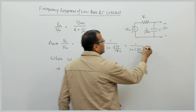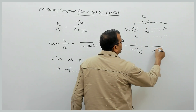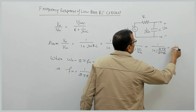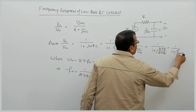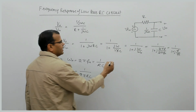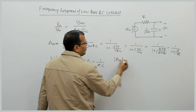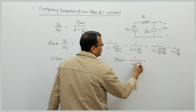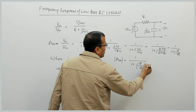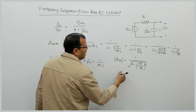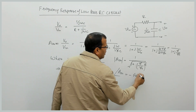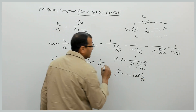This can be written as 1/(1 + j·2πF/(2πFH)), which simplifies to 1/(1 + jF/FH). The magnitude of AV₀ is equal to 1/√(1 + (F/FH)²), and the phase angle of AV₀ is equal to −tan⁻¹(F/FH).